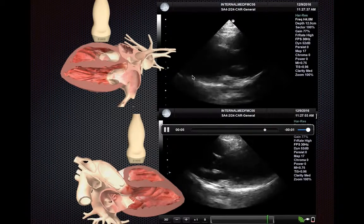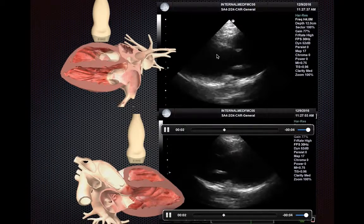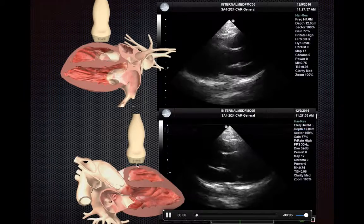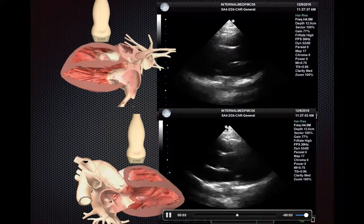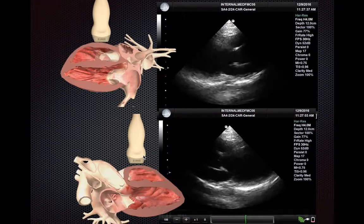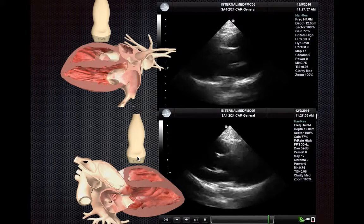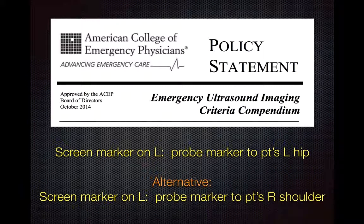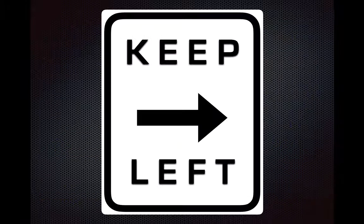To put these conventions side by side, the image is almost identical except it's the mirror opposite of the other one. For this third convention, your screen marker is on the left-hand side of the screen, and you point the transducer marker towards the patient's right shoulder to obtain this view. Either approach is quite reasonable: with the screen marker on the left, your probe marker can point to the patient's left hip — giving an image similar to many cardiology textbooks — or you can point it to the patient's right shoulder for the mirror opposite image.